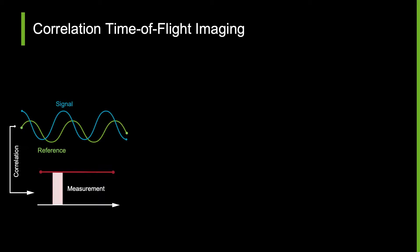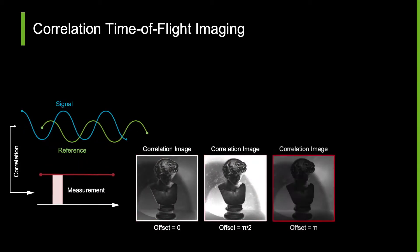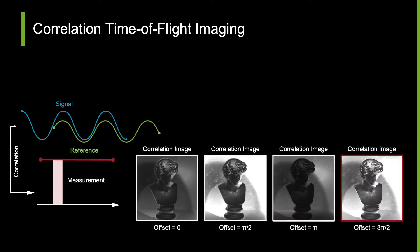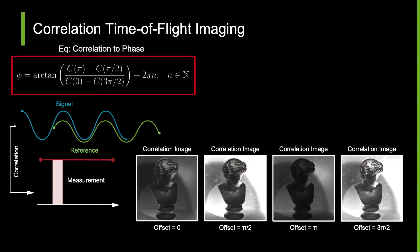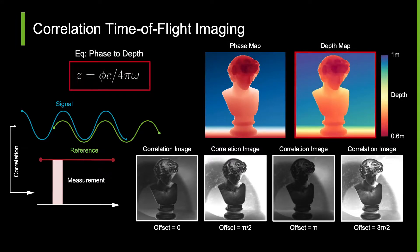Collecting an array of these measurements, we form a correlation image. By collecting four of these correlation images with varying phase offsets, we can use them together to solve for the phase of the returned light, producing a phase map which we can then convert into the desired depth map after phase unwrapping.